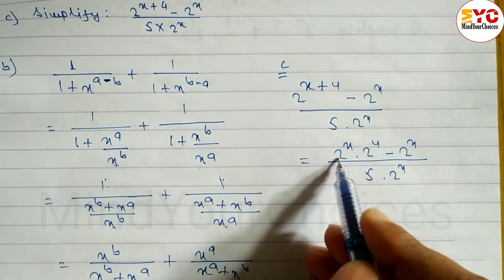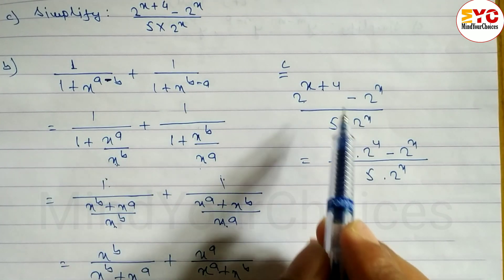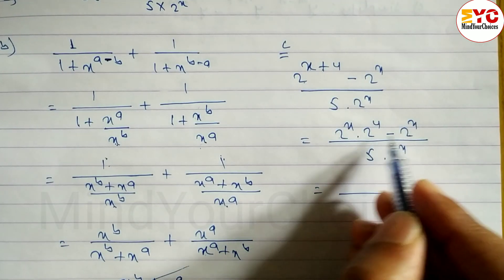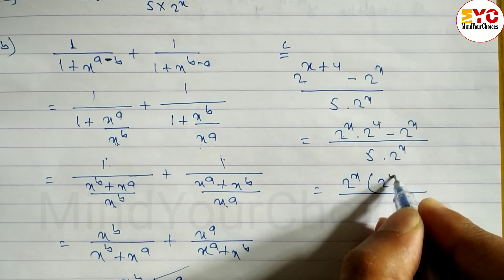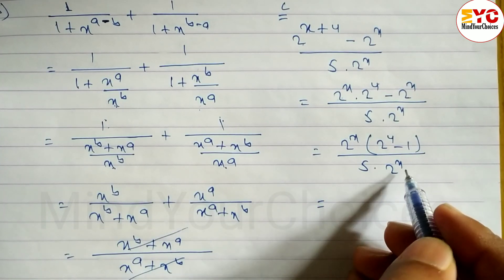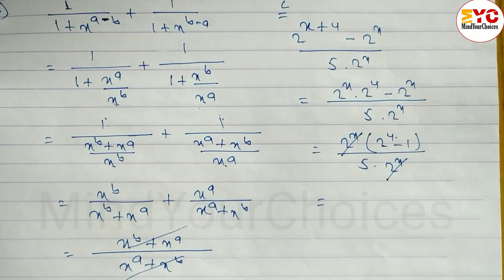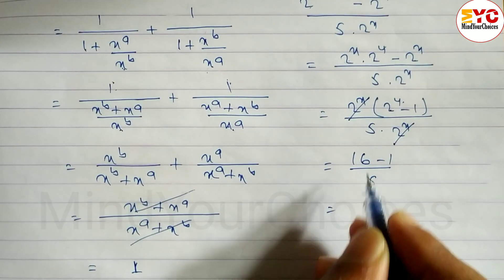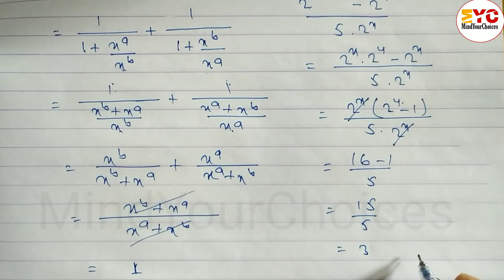We take 2 power x common from the numerator. What remains is 2 power 4 minus 1, divided by 5 into 2 power x. The 2 power x in numerator and denominator cancel. So we get (16 minus 1) divided by 5, which is 15 divided by 5, equal to 3. So 3 is your answer.